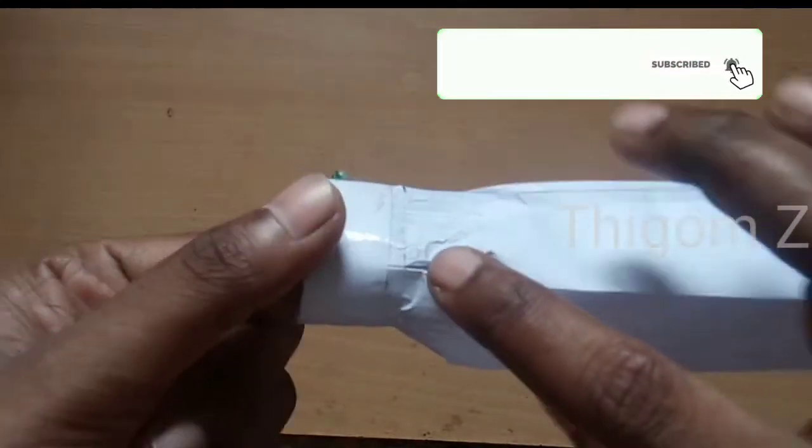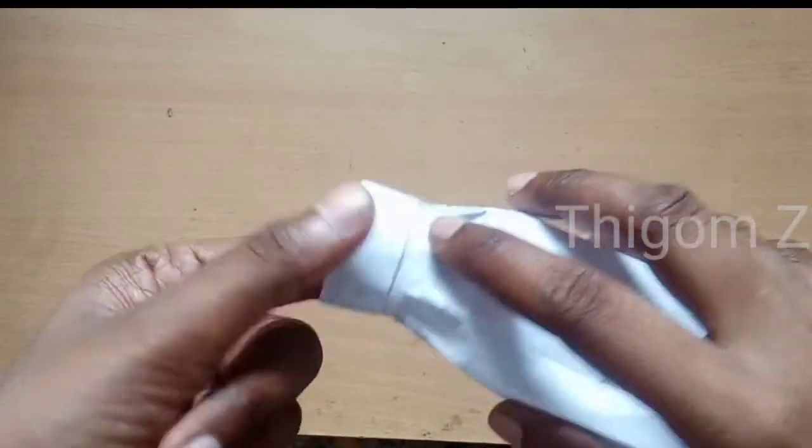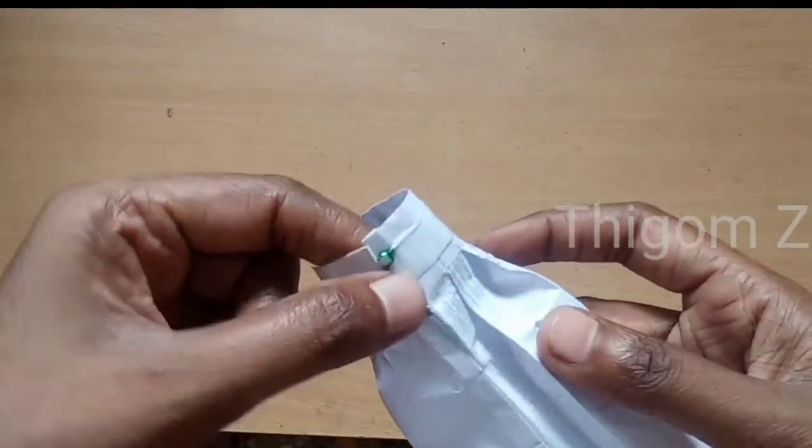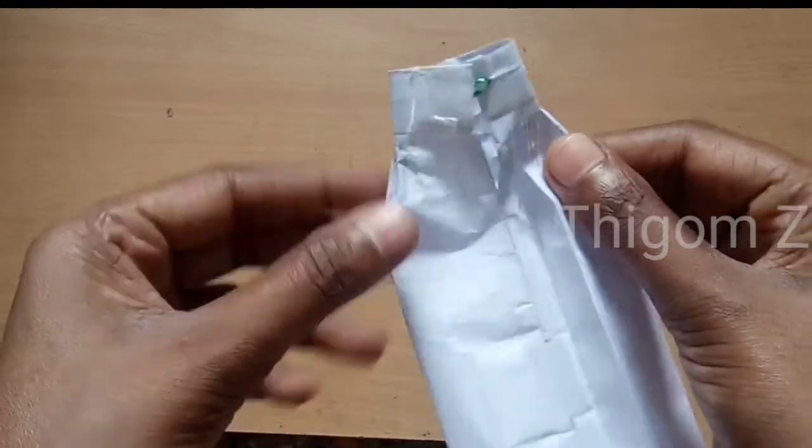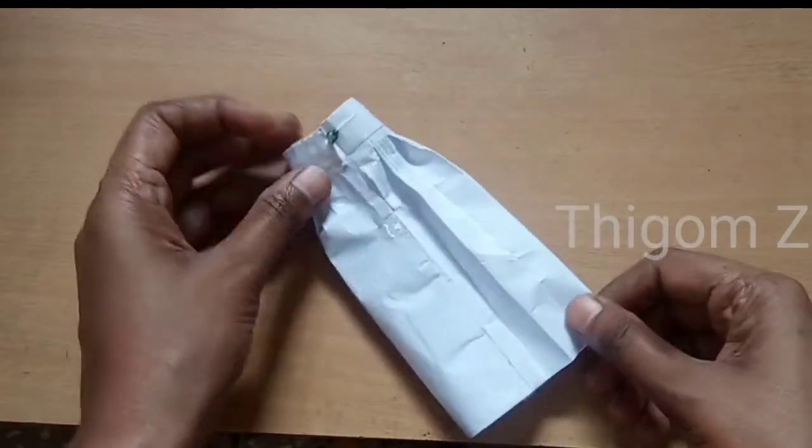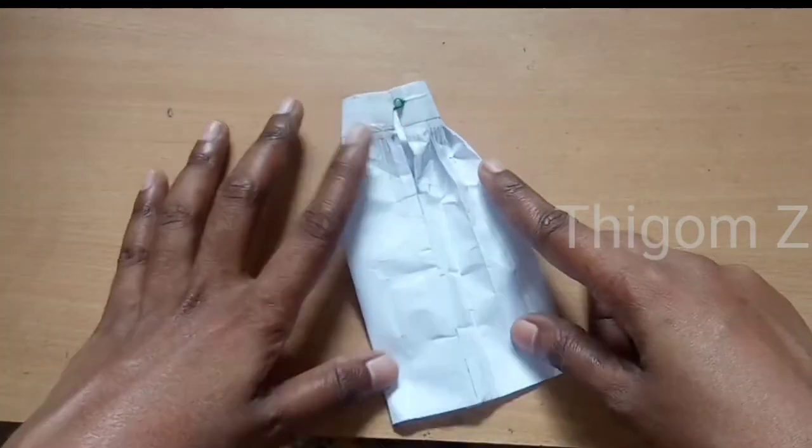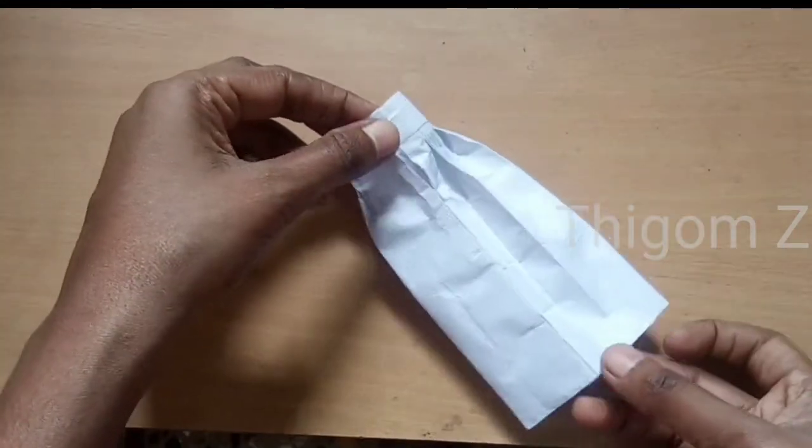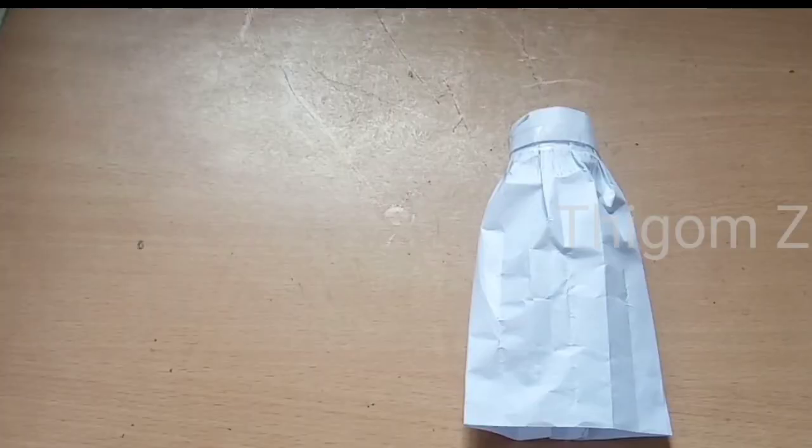Now the paper skirt is ready. You see the gathers and the belt part, and I also left the waist open. I hope this video is clear and understandable. I will catch you on my stitching video. Don't forget to subscribe to my YouTube channel. Bye!